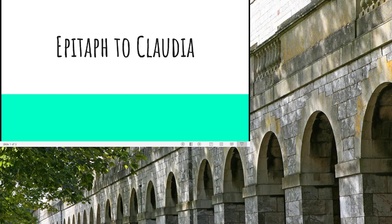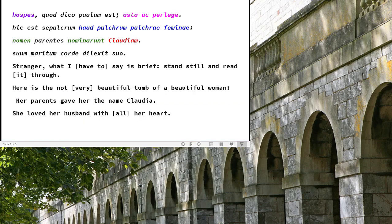On this monument her parents are mentioned not by name, but in their duty of giving her a name — so there's some credit there. They were good parents and she became a good wife. Let's look at what is eulogised, what is praised in this epitaph. The praise starts in the second line, but the first line is an informal address to a stranger passing by. The stranger is asked to 'asta' — to stand still — and 'perlege' — to read thoroughly. The 'per' at the beginning means to do something thoroughly, so it's to read through. Don't just look at the name, read it through.